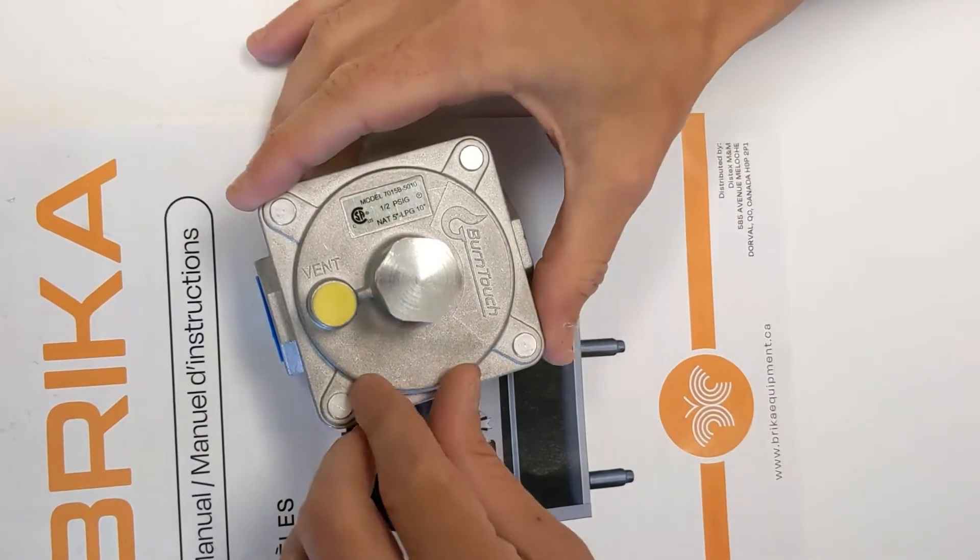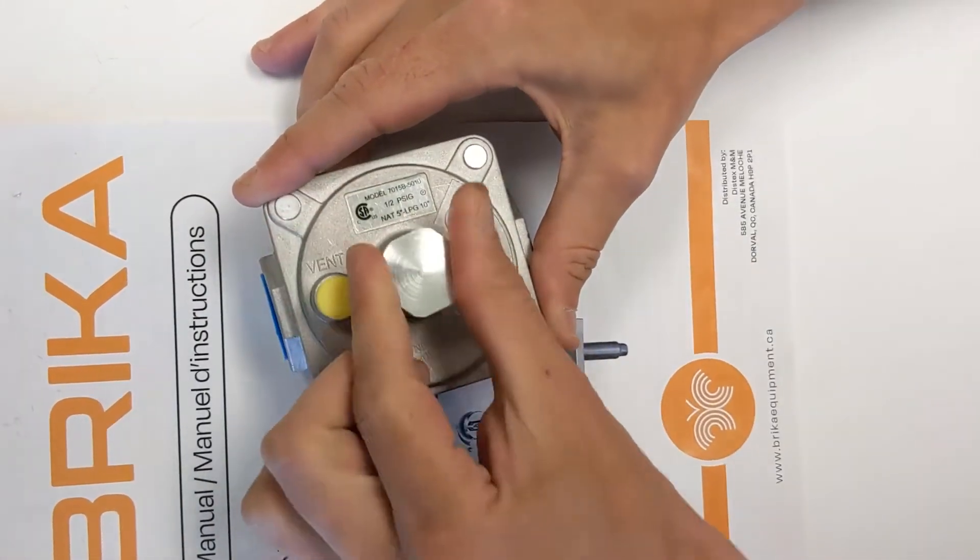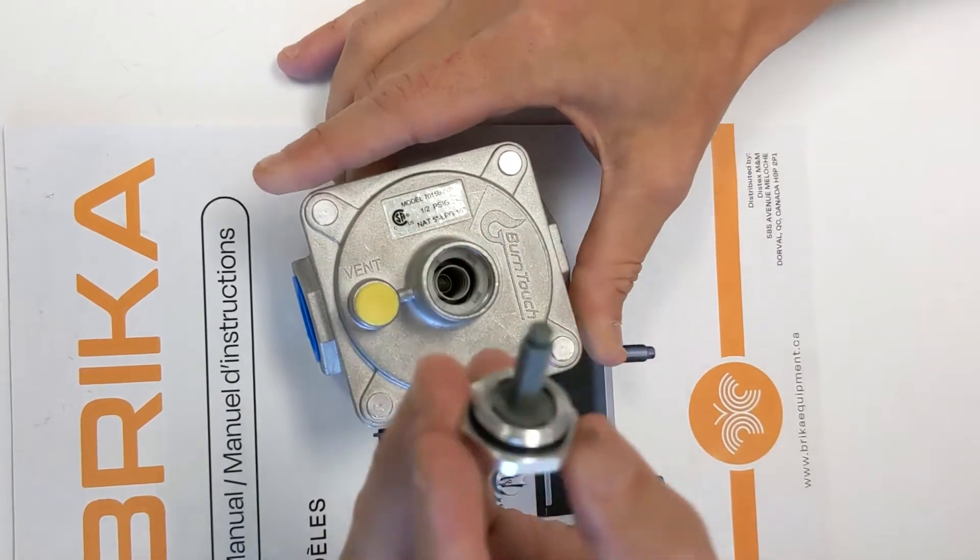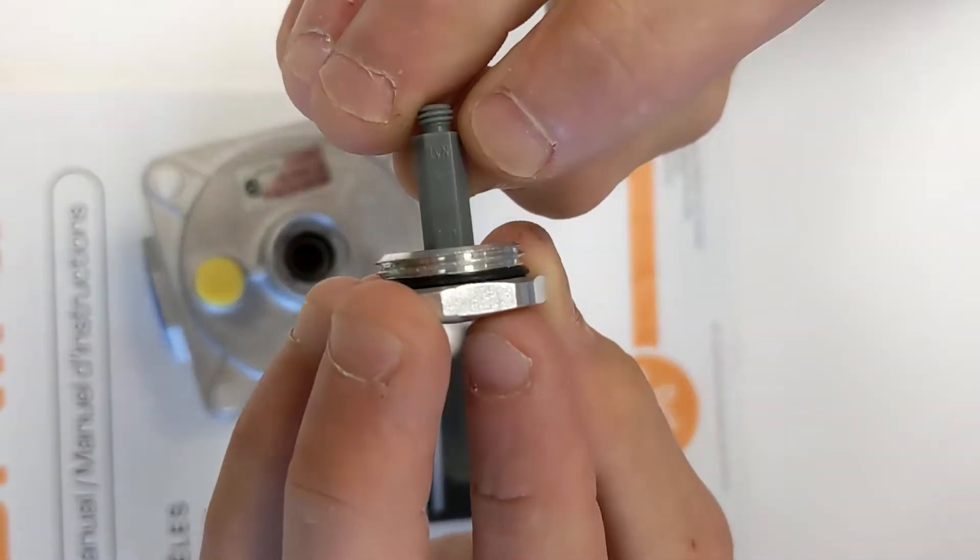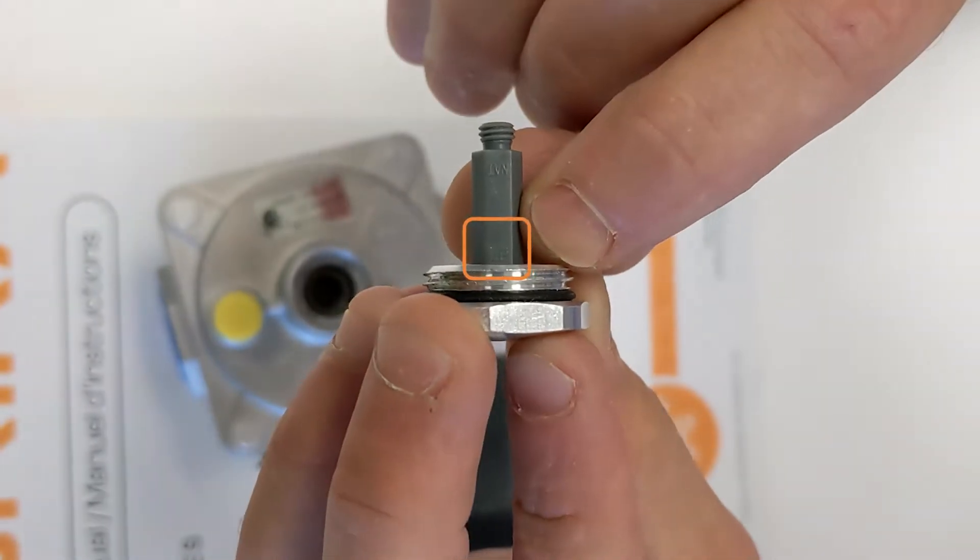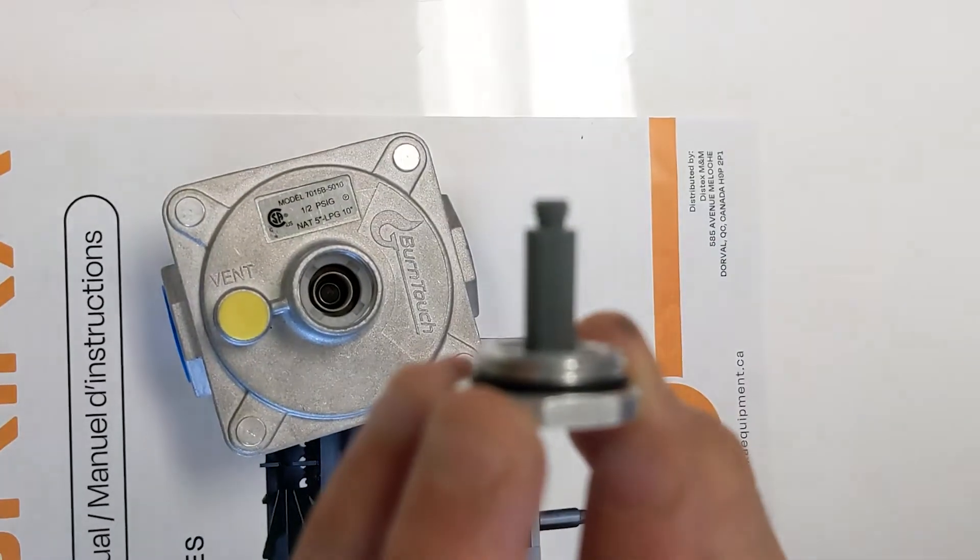This is how to convert the gas regulator. First, we're going to remove this cap by unscrewing. And here we have a stem on which we see natural and LP. Right now, it's set for natural gas.